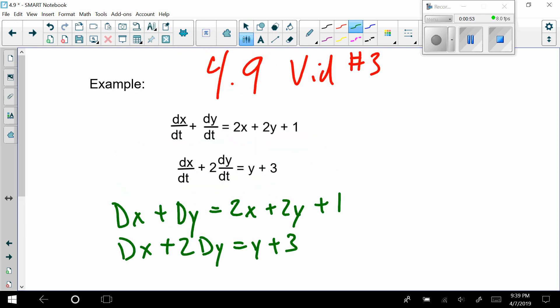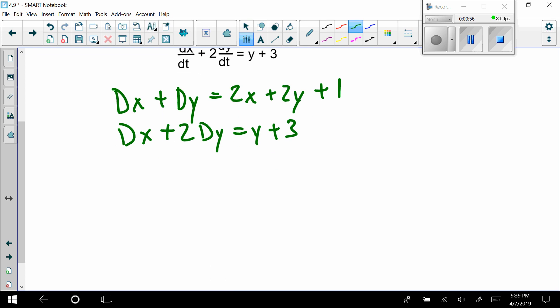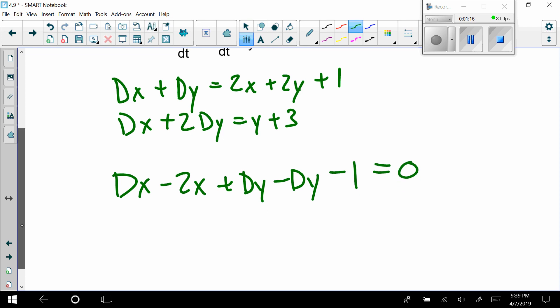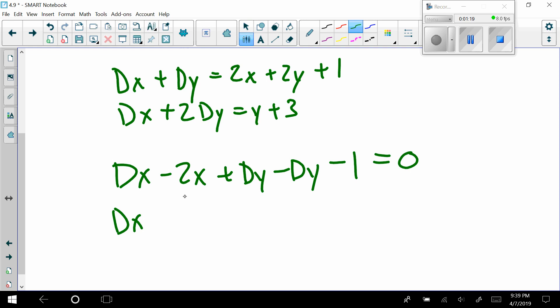We should have dx minus 2x plus dy minus 2y. You could put the 1 over here on the other side. It doesn't necessarily matter, but because it doesn't have any variable t, I think I'll move it.